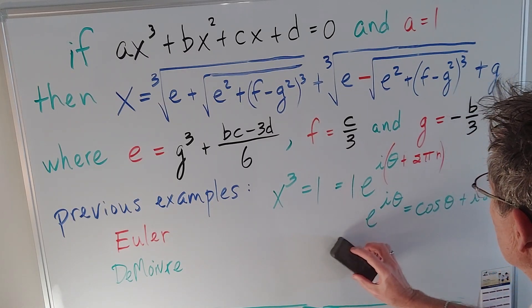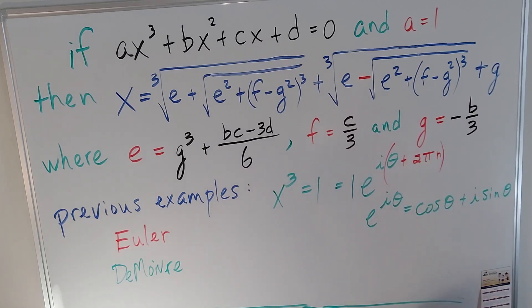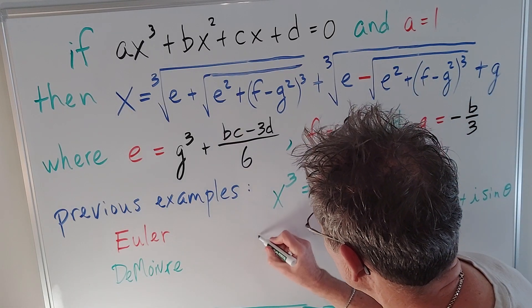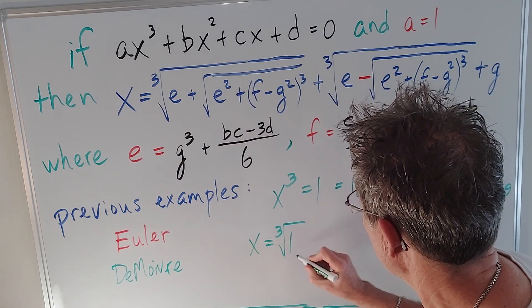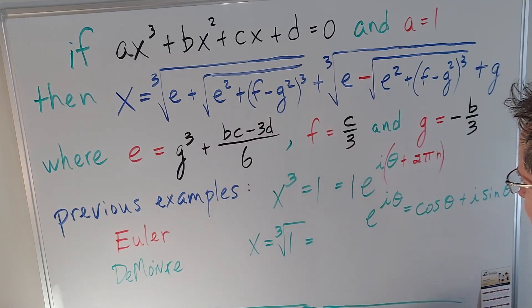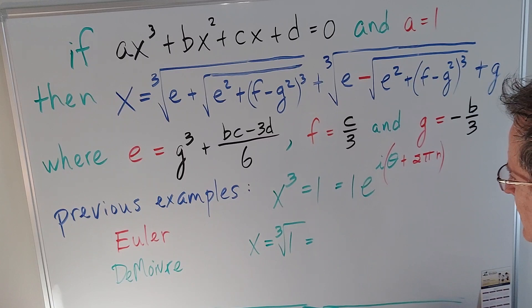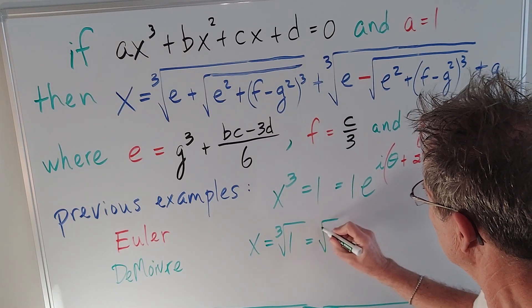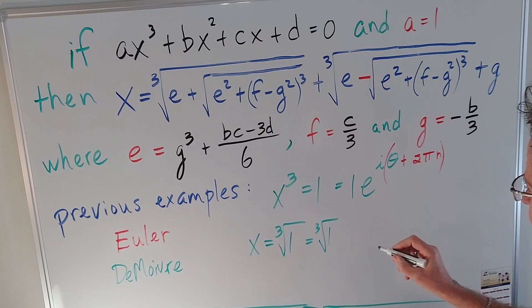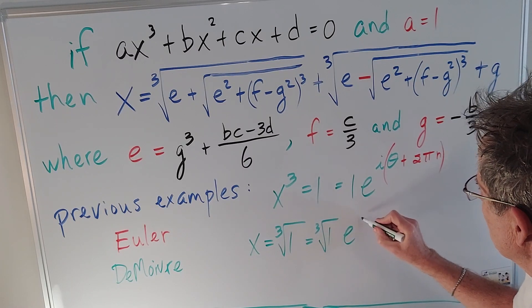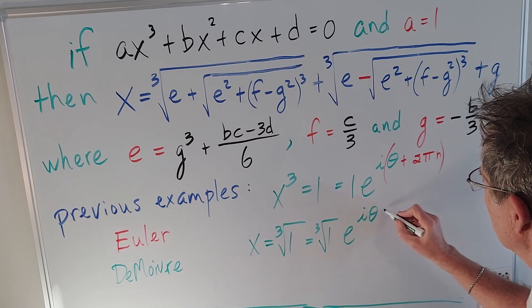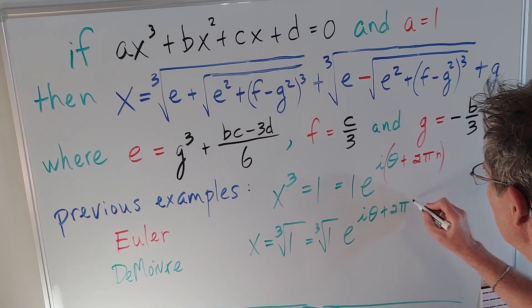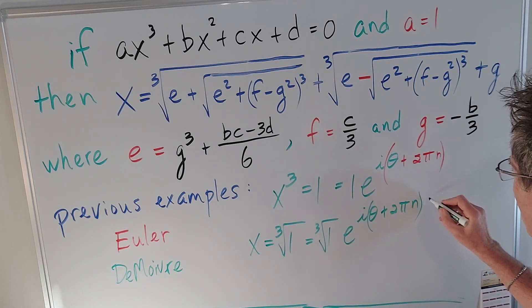So because of that, if I take the cube root to get x, I have to take the cube root of this, which is the cube root of the real number one which will just be one times e^(i(θ + 2πn)) raised to the one-third.